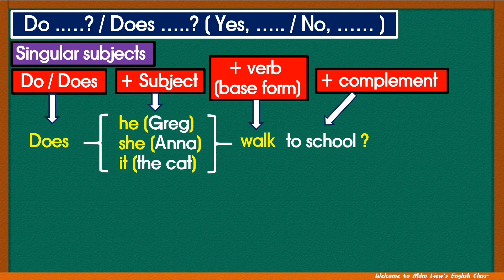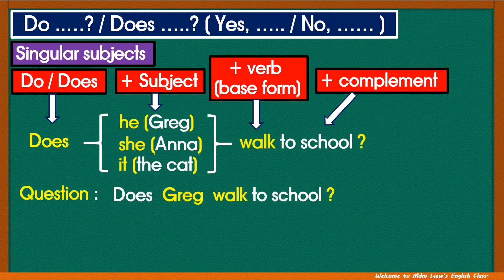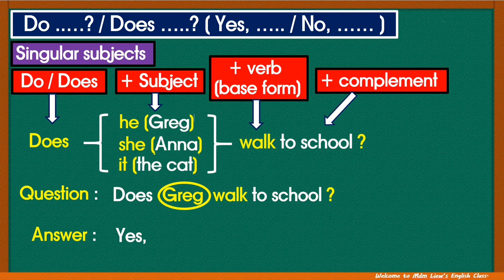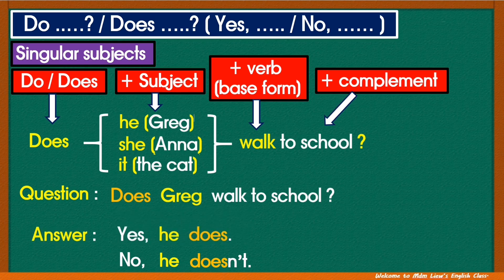Examples of correct questions: 1. Does he walk to school? 2. Does she walk to school? 3. Does it walk to school? Now let's see how to answer the questions. Example question: Does Greg walk to school? For a positive answer, start with yes, followed by the subject — instead of Greg, we can use he — followed by does: Yes, he does. For a negative answer, start with no, followed by he, then doesn't: No, he doesn't.